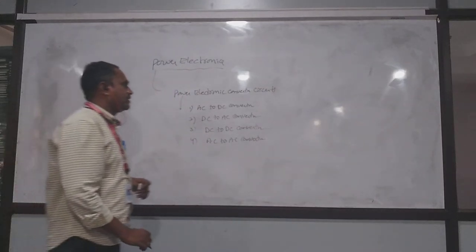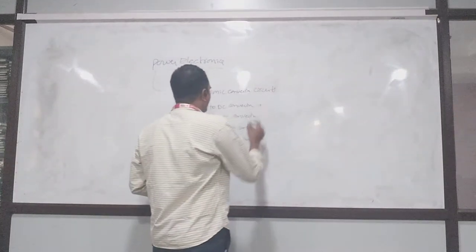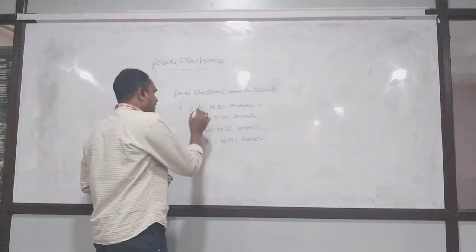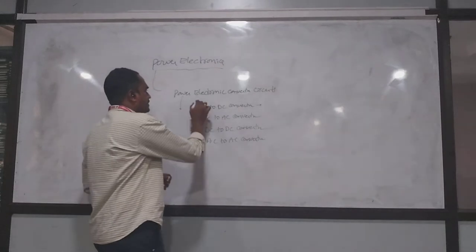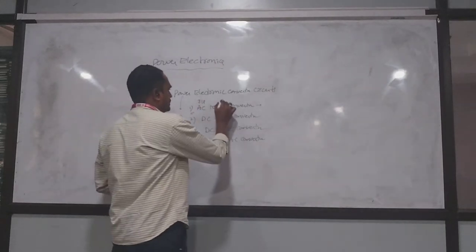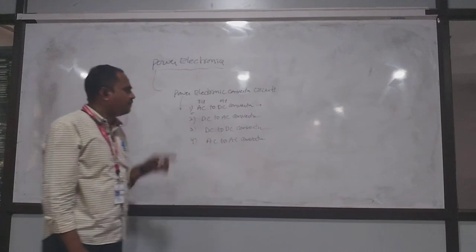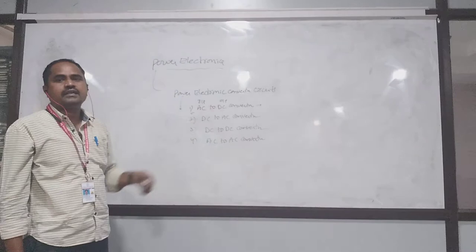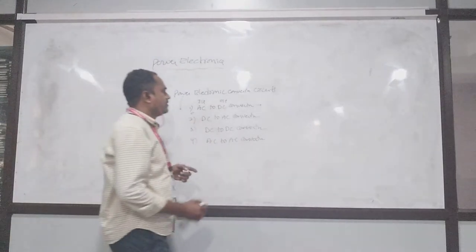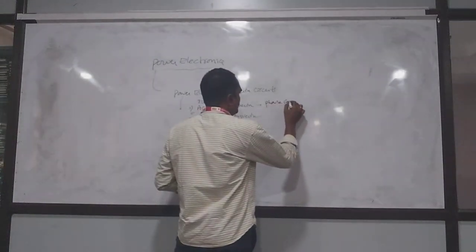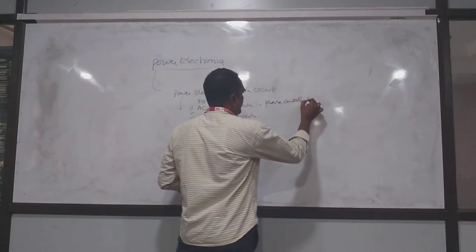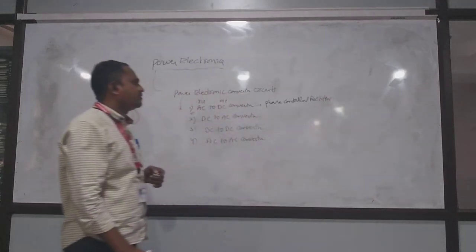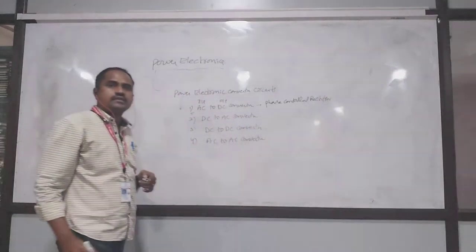The AC to DC converter: here the input is AC and output is DC. This is also called as a phase controlled rectifier. The AC to DC converter is also called a phase controlled rectifier.